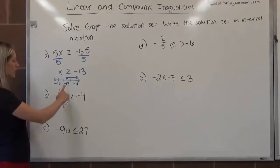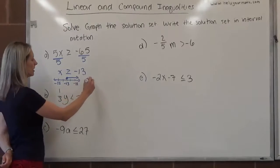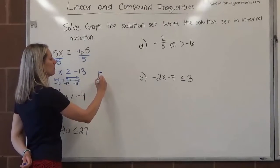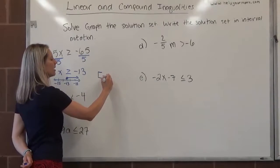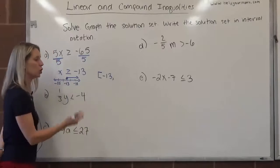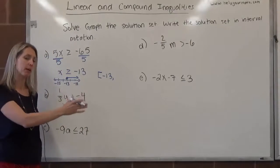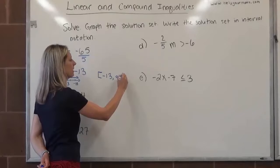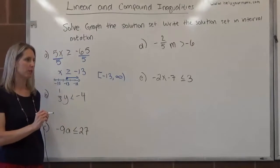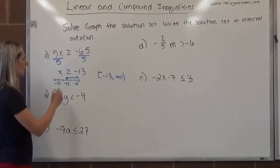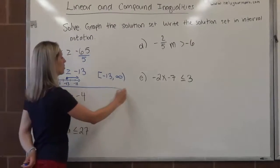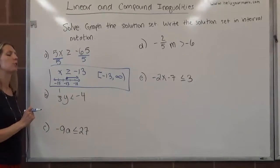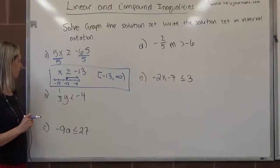In interval notation, the interval notation starts at negative 13, and negative 13 is included, so I would use a bracket: negative 13. There's no biggest number that's bigger than negative 13, so we put to infinity. With infinity, we always use a parenthesis. So this would be the three different representations of x is greater than or equal to negative 13.